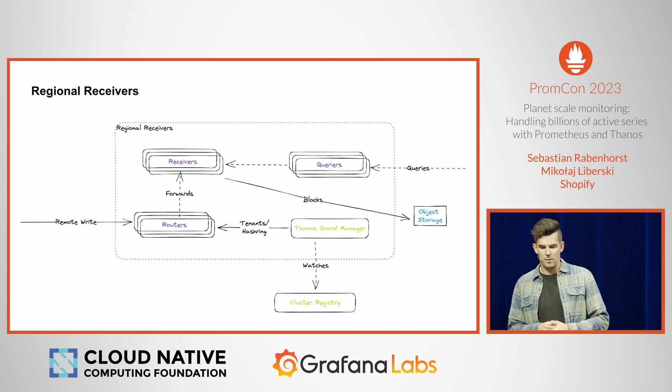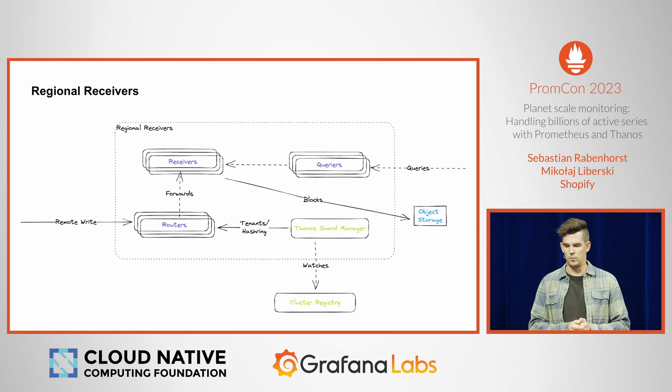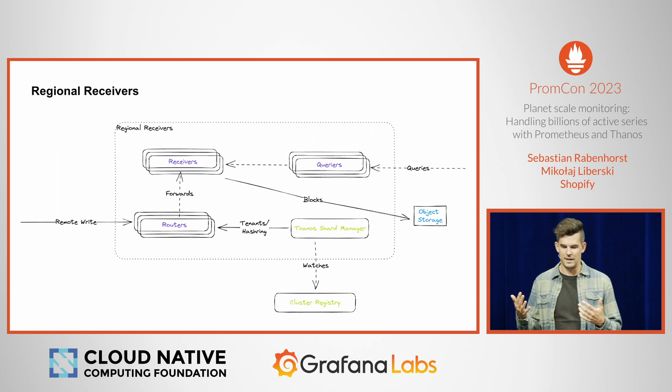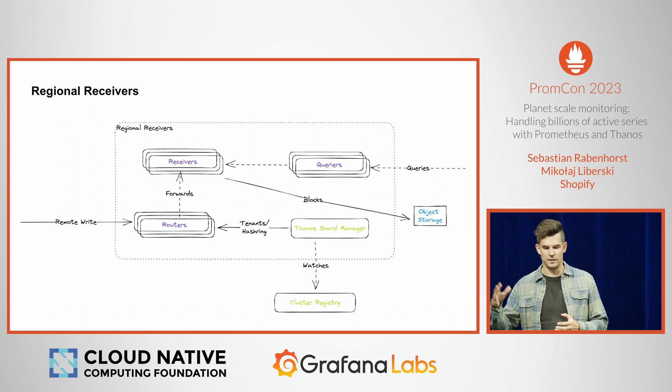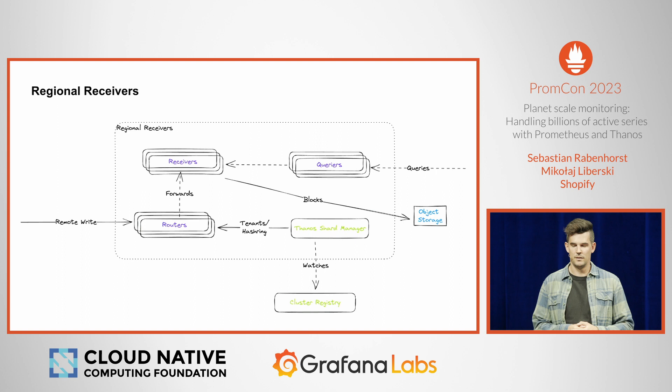The first deployment was just standard receivers — multiple receiver instances — but we had several issues there. The most important issue was it wasn't really stable during rollout, or when one receiver went down, because a receiver has both the role of forwarding and ingesting metrics. So what we did was split up into routers and receivers to solve this problem. Only the routers need to know where metrics go, and receivers will ingest metrics but also upload blocks every two hours into object store for further processing.